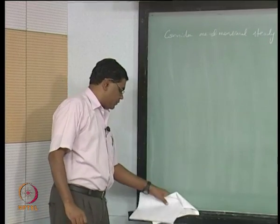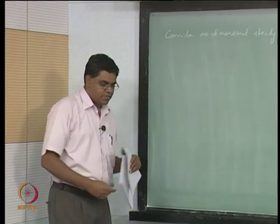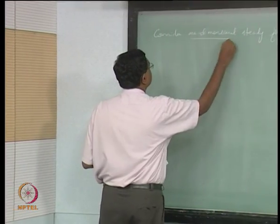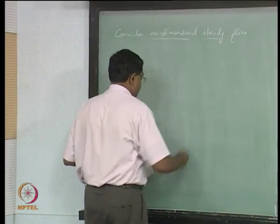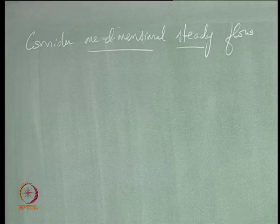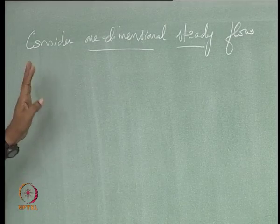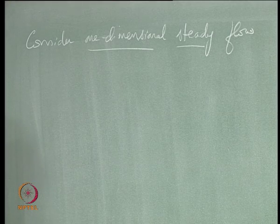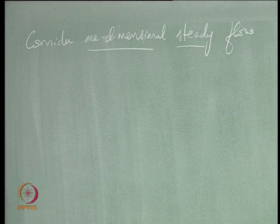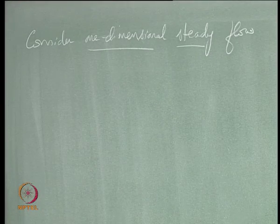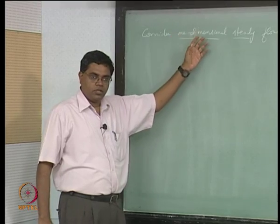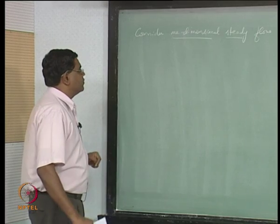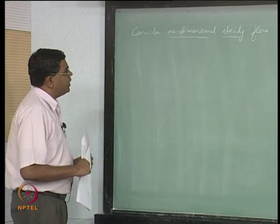So you are doing two simplifications here: one is we are considering one dimension, and the second is that we are looking at steady flow. I would like to point out that for what we are trying to do here, we do not need to make these assumptions. The final result that we are going to get should be valid for a three-dimensional unsteady flow as well — this is just to keep things simple in what we are going to do now.